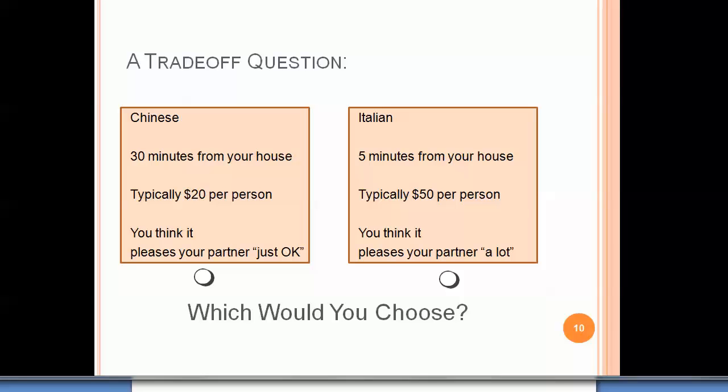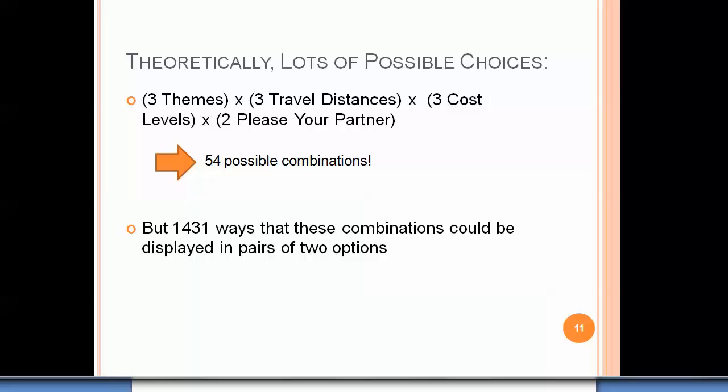We could ask you in a survey context which of those two you'd prefer and collect your answer. We could continue to ask you about such trade-offs with different combinations of restaurants. In this example there are three cuisine types by three travel distances by three cost levels by two levels of pleasing your partner — 54 possible combinations. There are 1,431 ways those combinations could be displayed in pairs of two options, and more complex decisions lead to thousands or millions of possible combinations.